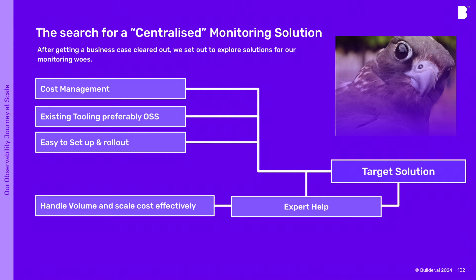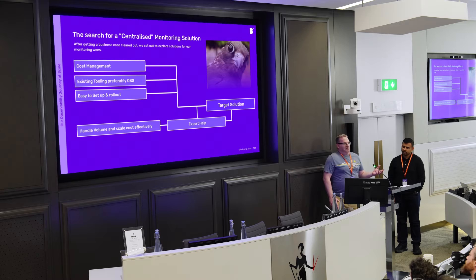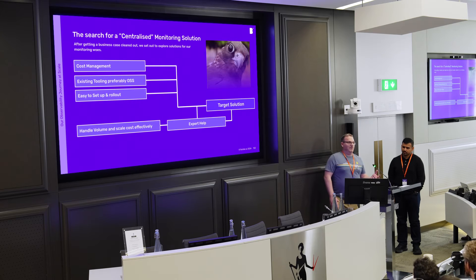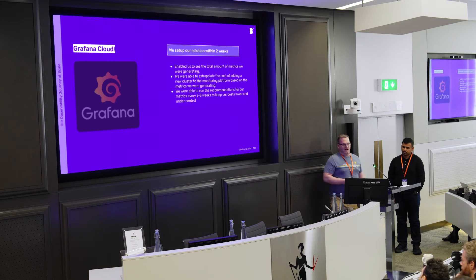When looking at a centralized solution, we looked at cost, tooling — we had prior experience with Grafana which was a nice fit — how easy it is to set up and roll out. We're very Kubernetes-heavy, and there was a clear, easy path to deploy. Handling the scale becomes Grafana's problem, which takes that off us. We also talked to the professional services people and they helped us a lot with the integration. With all those things considered, we decided to use Grafana Cloud.